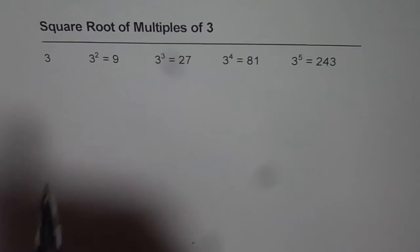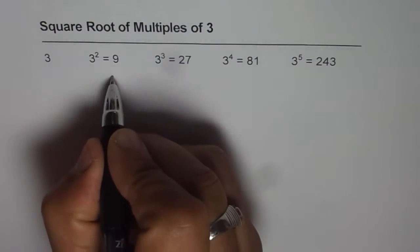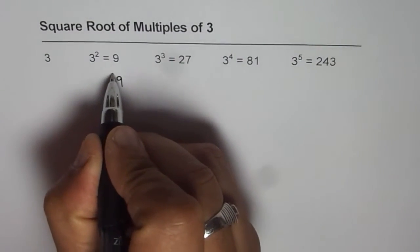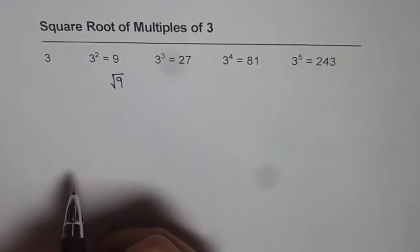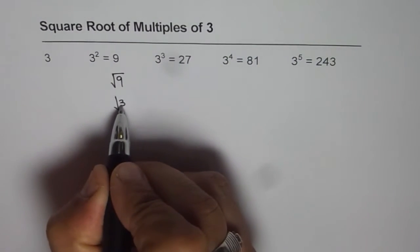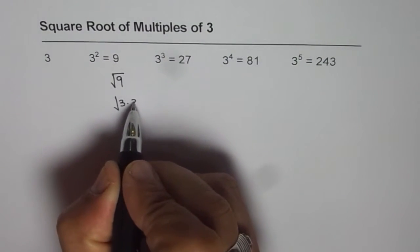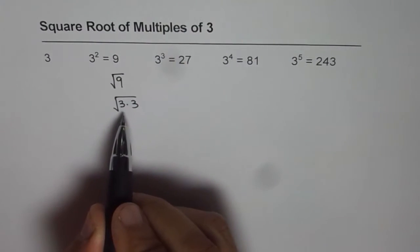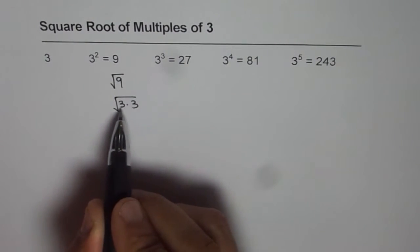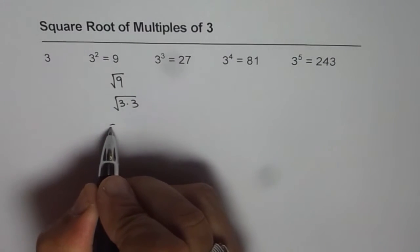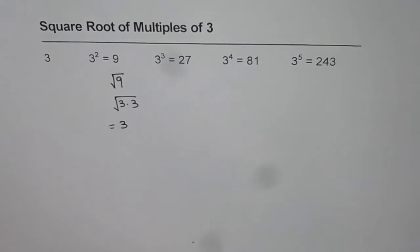Let us start with 9. What is the square root of 9? To find square root of 9, we can write 9 as 3 times 3. And as you know, if we have the same 2 factors, then the square root is equal to one of them. So we get 3 as our answer.